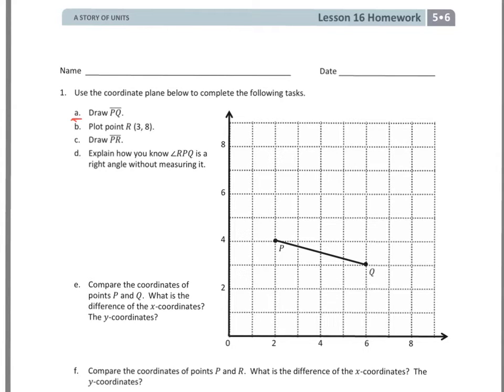Part B says plot point R, 3 comma 8. So I've got to go over 3, which is right here, because I've got to go X and then Y. And then I've got to go up to 8, which is right here. So here's point R, and now it says draw segment PR. So I'm going to connect my point R and P. So there's my segment PR there, in red.